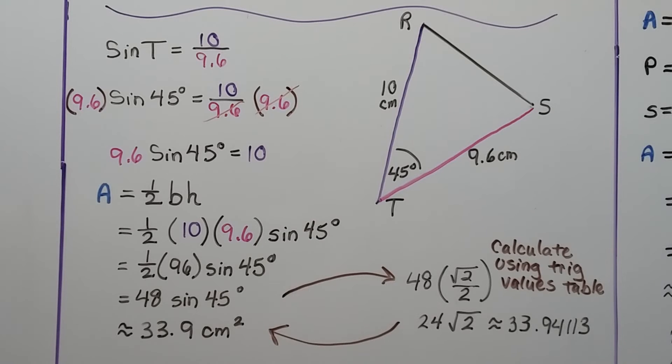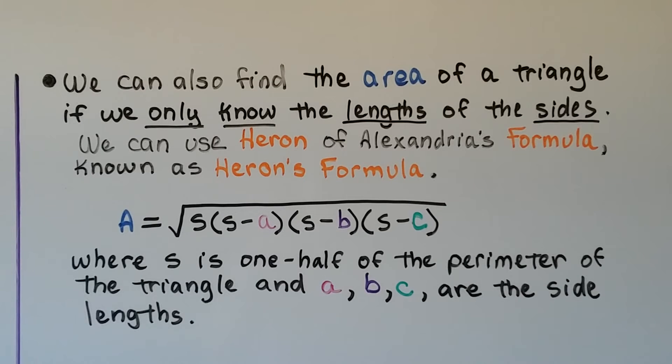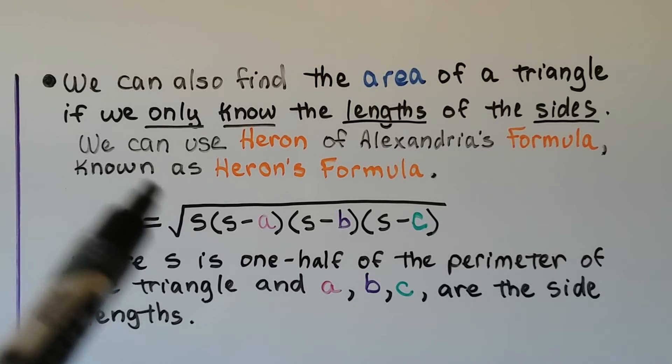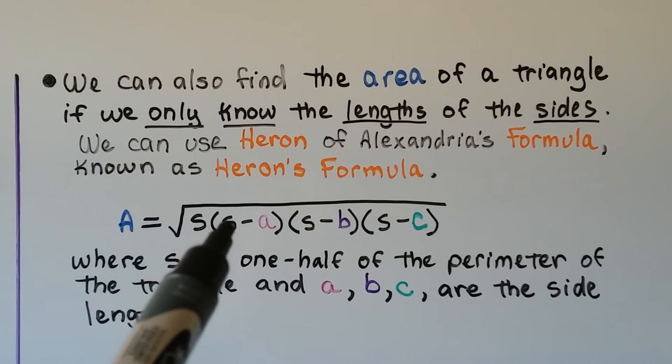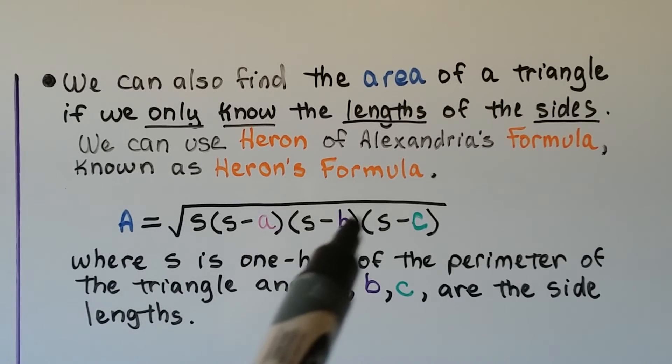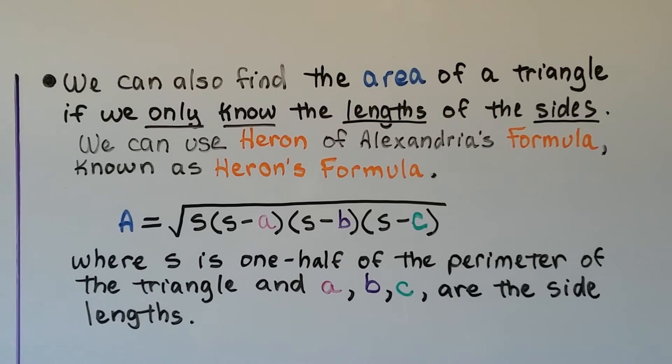And there's another way. We can also find the area of a triangle if we only know the lengths of the sides. We can use Heron of Alexandria's formula, known as Heron's formula. So the area is going to equal the square root of s times (s - a) times (s - b) times (s - c). And this s is one half of the perimeter of the triangle, and the a, b, c are the side lengths.